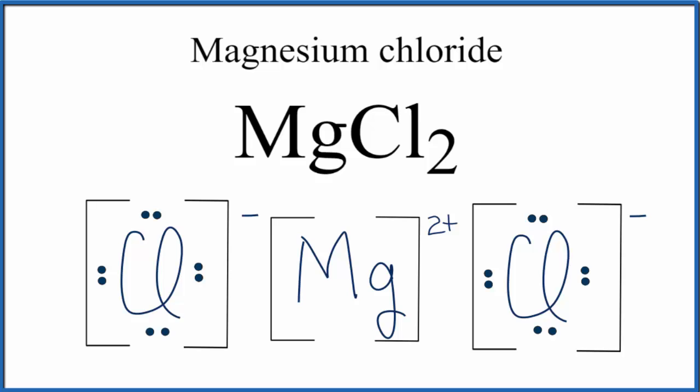Note that now this magnesium has a plus two charge, and these negative charges on the chlorines are attracted. The negatives are attracted to the positives, and that's why the chlorines are bonded with the magnesium in magnesium chloride.